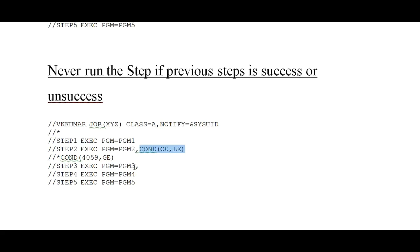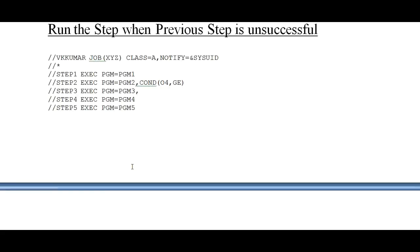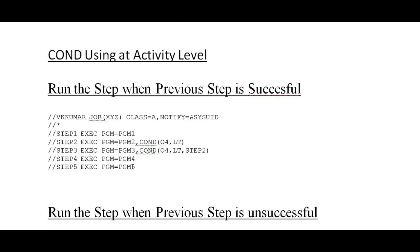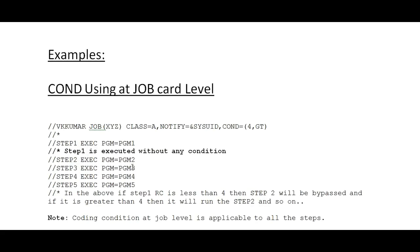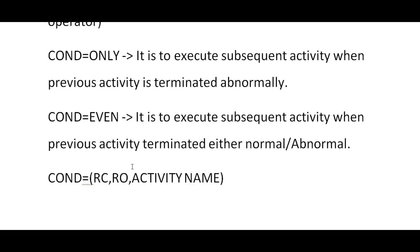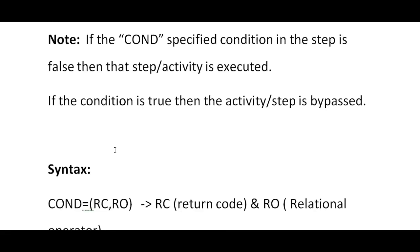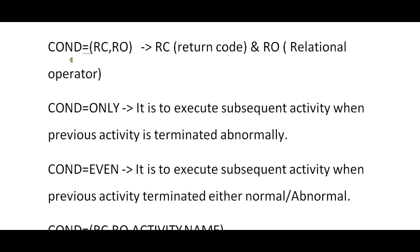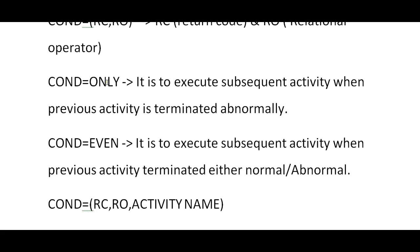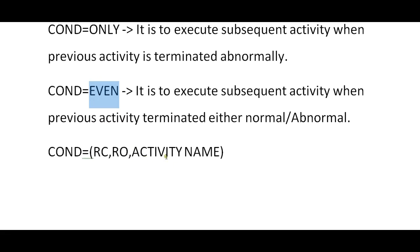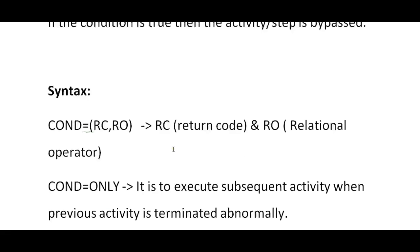These are the multiple ways and different scenarios you might come across while working on JCL using COND parameters. This is very, very important. Try to practice it differently — take a minimum of 5 to 10 steps and make use of these different COND parameters. Also try COND with ONLY and EVEN and with activity names. You have 10 activities or steps — give the return code of step five with the activity name and try it differently.